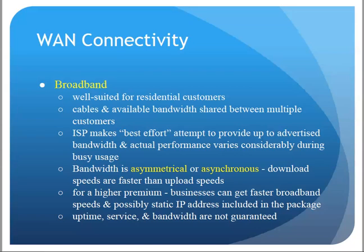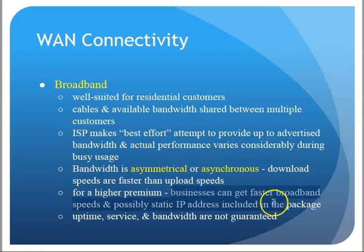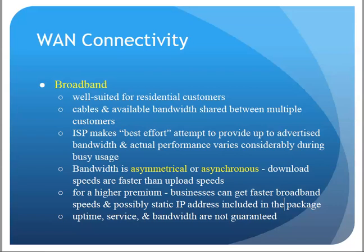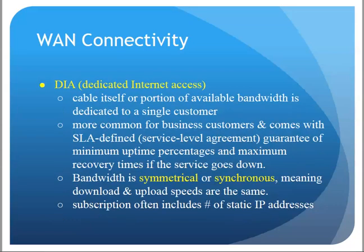General broadband is well-suited for residential customers and even some business sites. With broadband, the ISP makes a best-effort for the advertised bandwidth — you get up to that bandwidth. In many cases the bandwidth is asymmetrical, meaning download is faster than upload, which for most home users and small businesses is fine. Higher-tier business packages may get faster broadband and possibly static IP addresses.